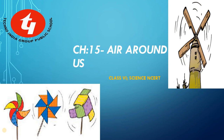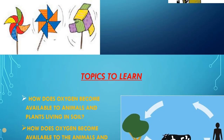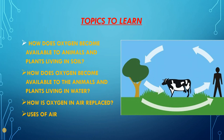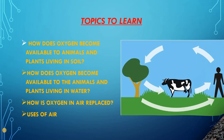Hello my dear students, welcome to science class. We are continuing with chapter number 15, Air Around Us from your Science NCERT book. Today we will be learning about: how does oxygen become available to animals and plants living in the soil? How does oxygen become available to the animals and plants living in water? How is oxygen in air replaced? And what are the uses of air?